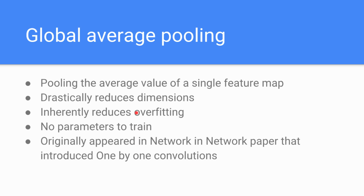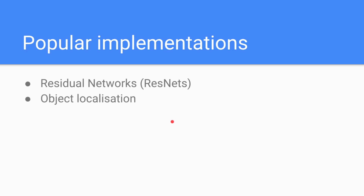By a factor of H × W, it drastically reduces the dimensions of the output layer. By reducing the dimensions, the number of parameters is reduced, and if we have a lot of parameters we are prone to overfitting — so this inherently reduces overfitting. Like other pooling operations, we don't have any parameters to train. This operation originally appeared in the Network-in-Network paper, the same paper that also introduced 1×1 convolutions. Some popular implementations that include a GAP layer are ResNets and object localization.